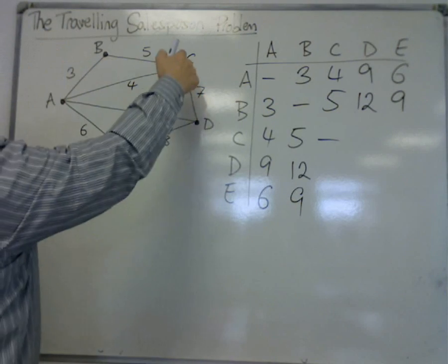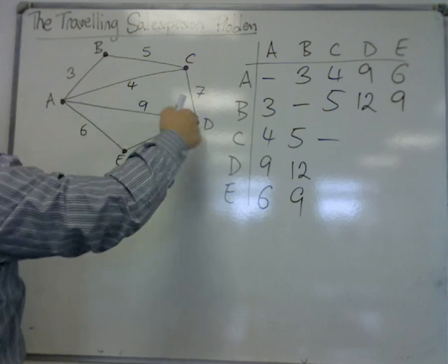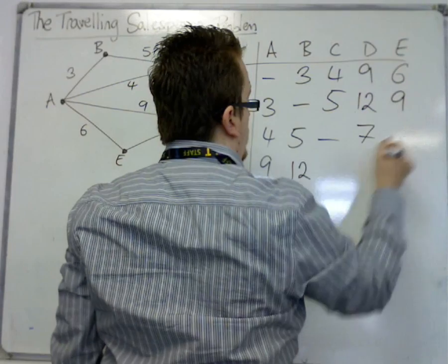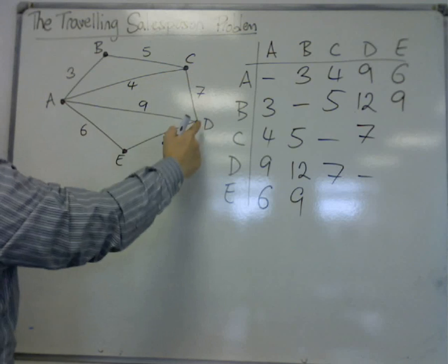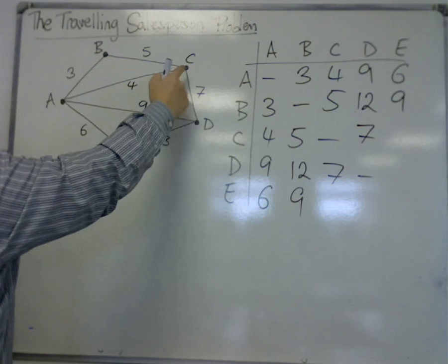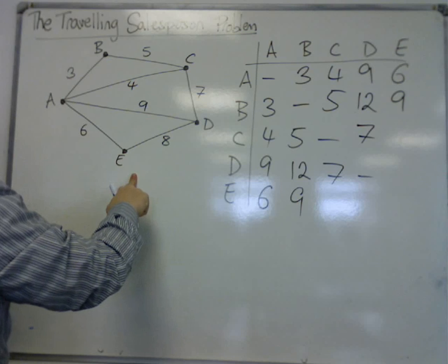C to D is looking like 7 because that would be 13. C to E, it's looking like 15. There's a 4, then a 6 there, so that's 10.